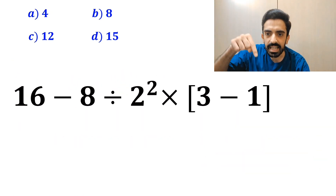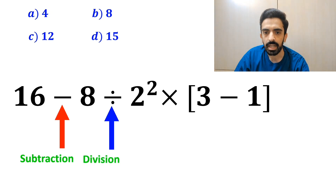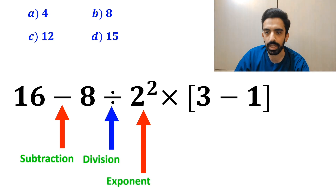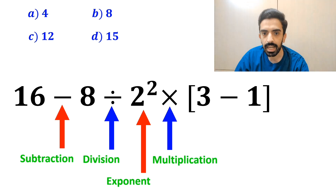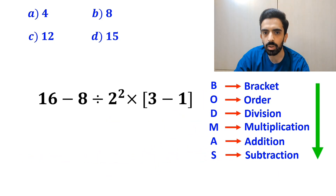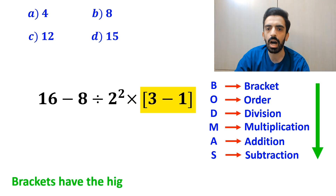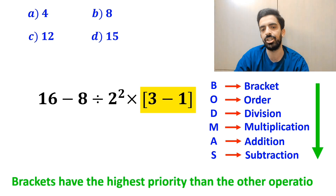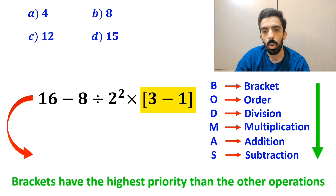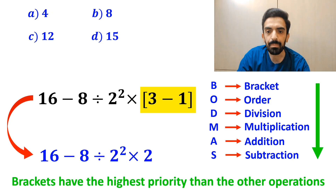As you can see in the image, in this expression we first have a subtraction sign, then a division sign, and after that we have an exponent, then a multiplication, and finally brackets. According to the BODMAS rule, first we should start with the brackets, because brackets have the highest priority. So we can write this expression as 16 minus 8 divided by 2 squared times 2.